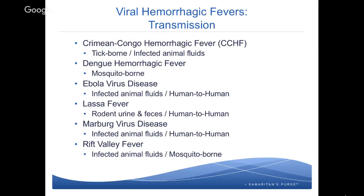Moving on, we have Ebola virus disease, or EVD. This is transmitted through infected animal fluids. Bats of many kinds are known to be reservoirs for this virus, though there are potentially other animals as well. Generally an outbreak starts with an individual being infected by some type of animal fluid, and then it quickly turns into human-to-human transmission — that's when an outbreak really starts to expand. This is generally seen in central and west Africa.